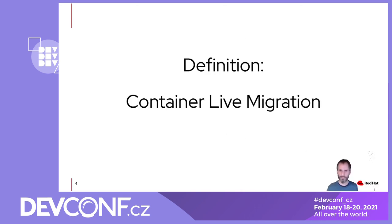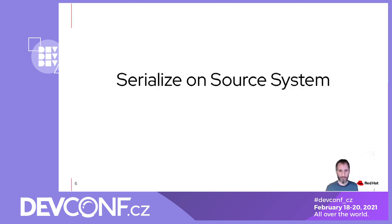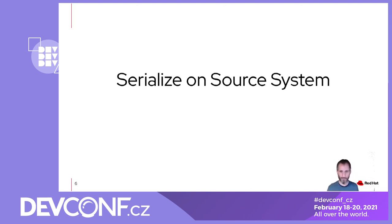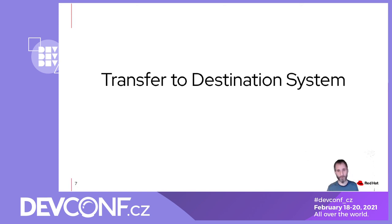I usually like to start with the definition of what container live migration is, because there's often some discussion about it. For me, container live migration is basically the same as VM migration. You take your container and transfer it from one system to another — you could also call it stateful migration. The steps are simple: you first serialize your container on your source system, write it to disk or some storage backend, transfer the checkpoint to the destination system, and then restore the container.